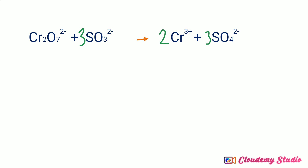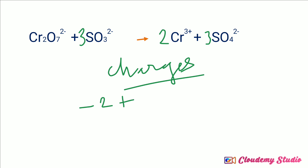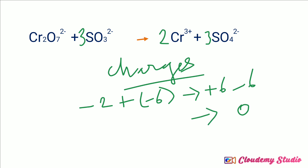Now we need to check the charges. On the left hand side, Cr2O7 2 minus has charge minus 2, and the sulfite ion 3 times minus 2 gives minus 6, for a total of minus 8. On the right hand side, two Cr3 plus gives plus 6, and three sulfate ions give 3 times minus 2 equals minus 6, for a total charge of zero.